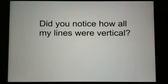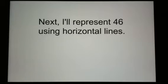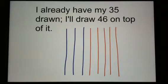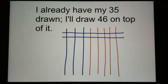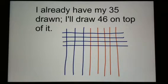Did you notice how all my lines were vertical? Next, I'll represent 46 using horizontal lines. I already have my 35 drawn and I'm going to draw 46 on top of it using my horizontal lines. So 46 is made up of four tens: 10, 20, 30, 40.